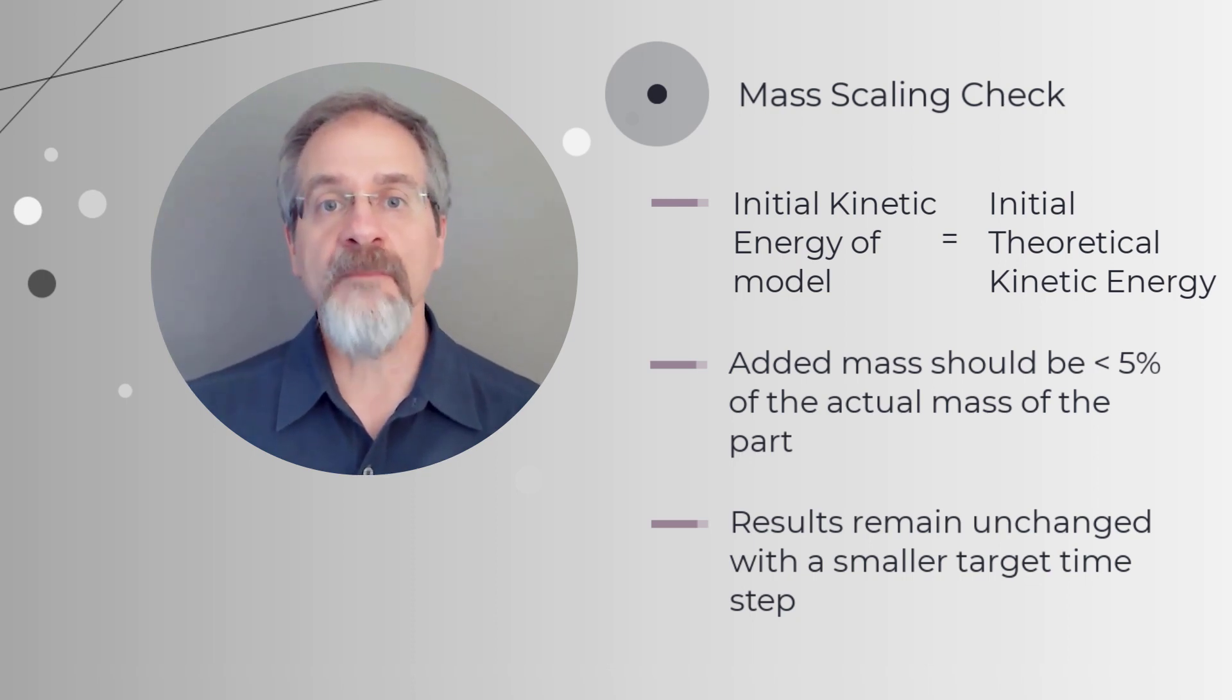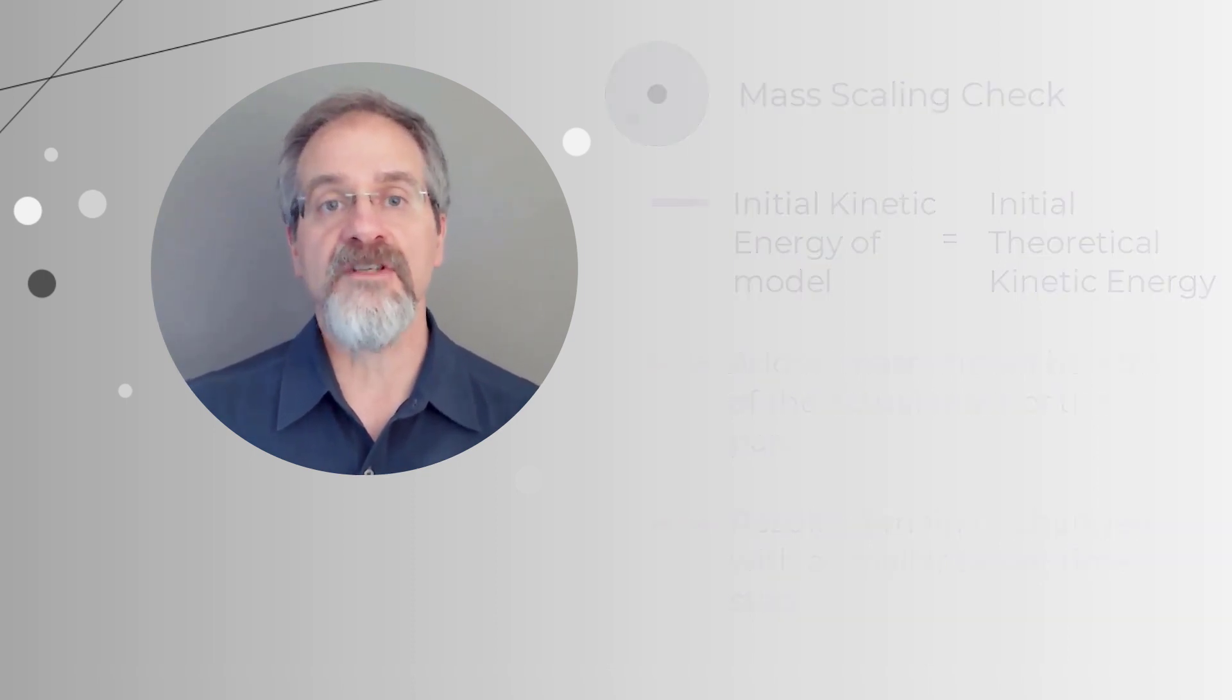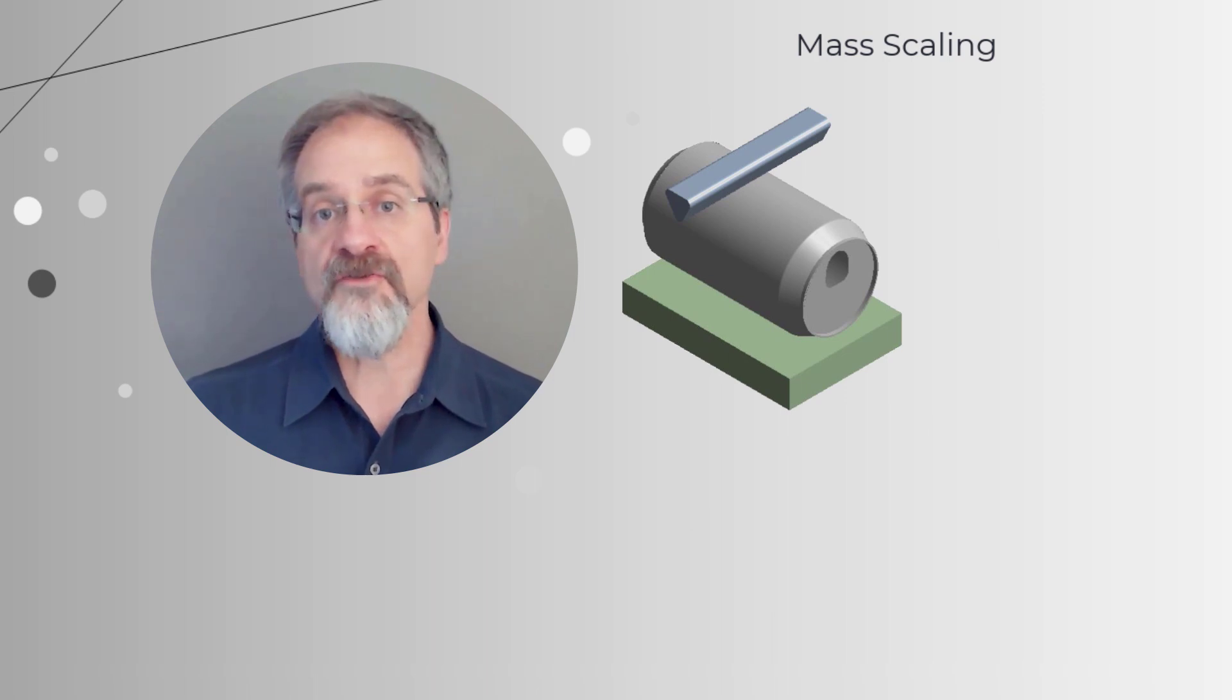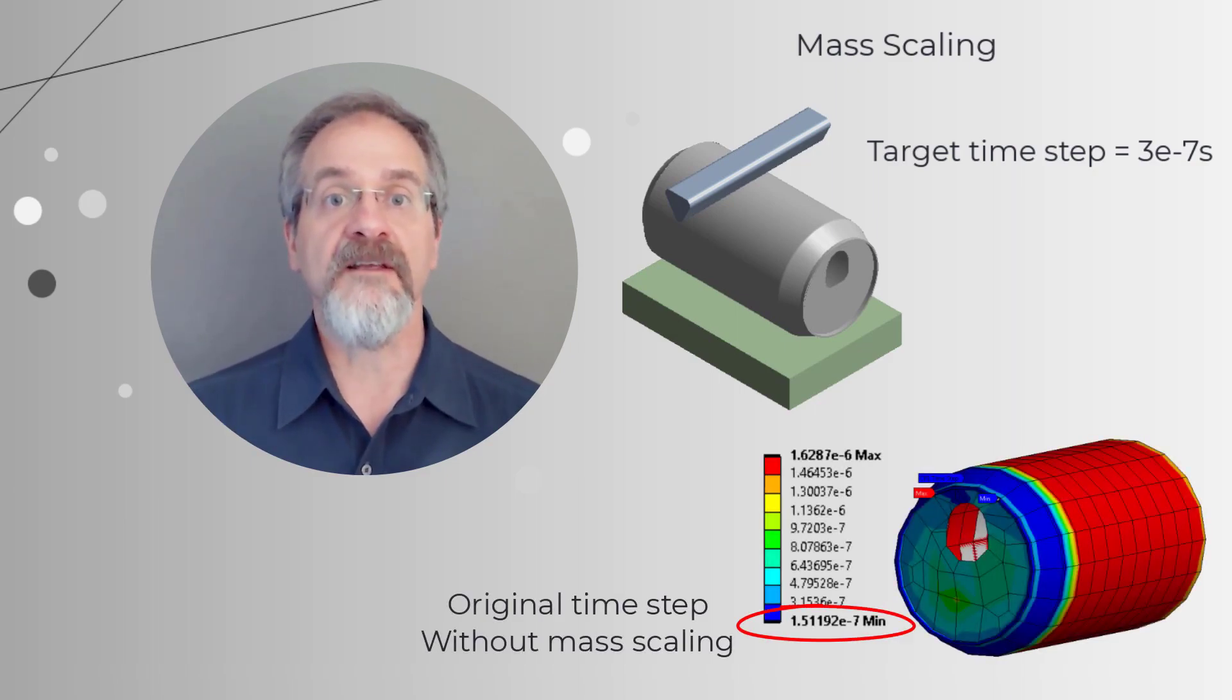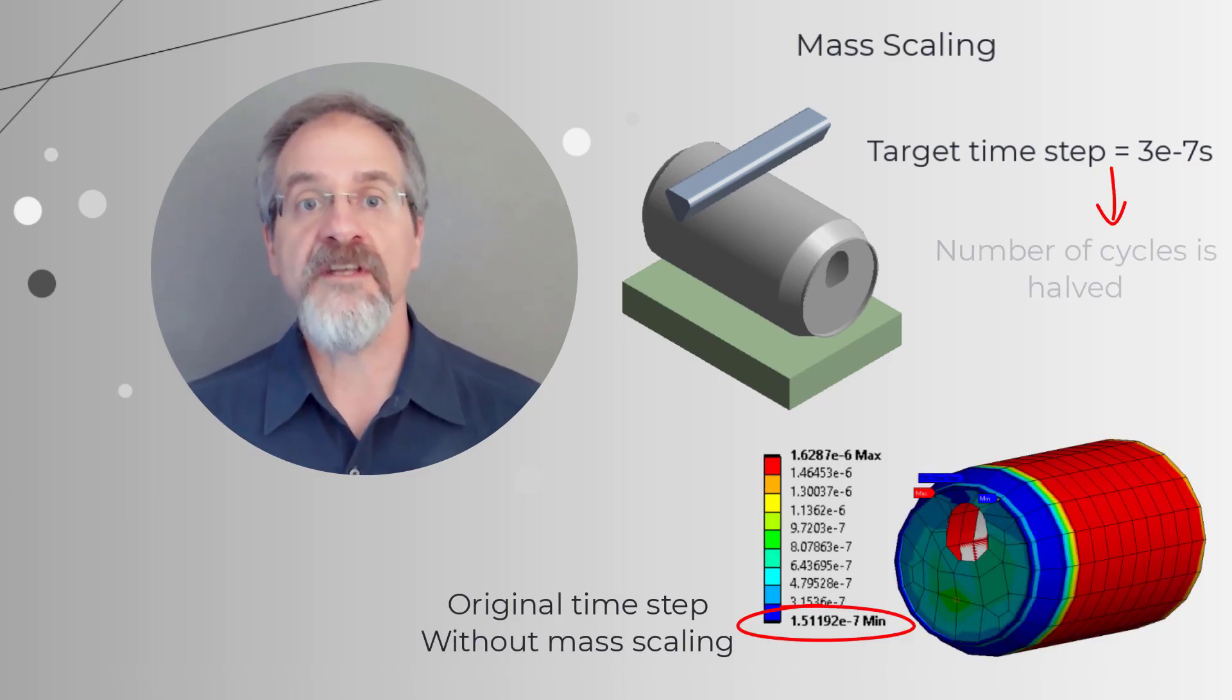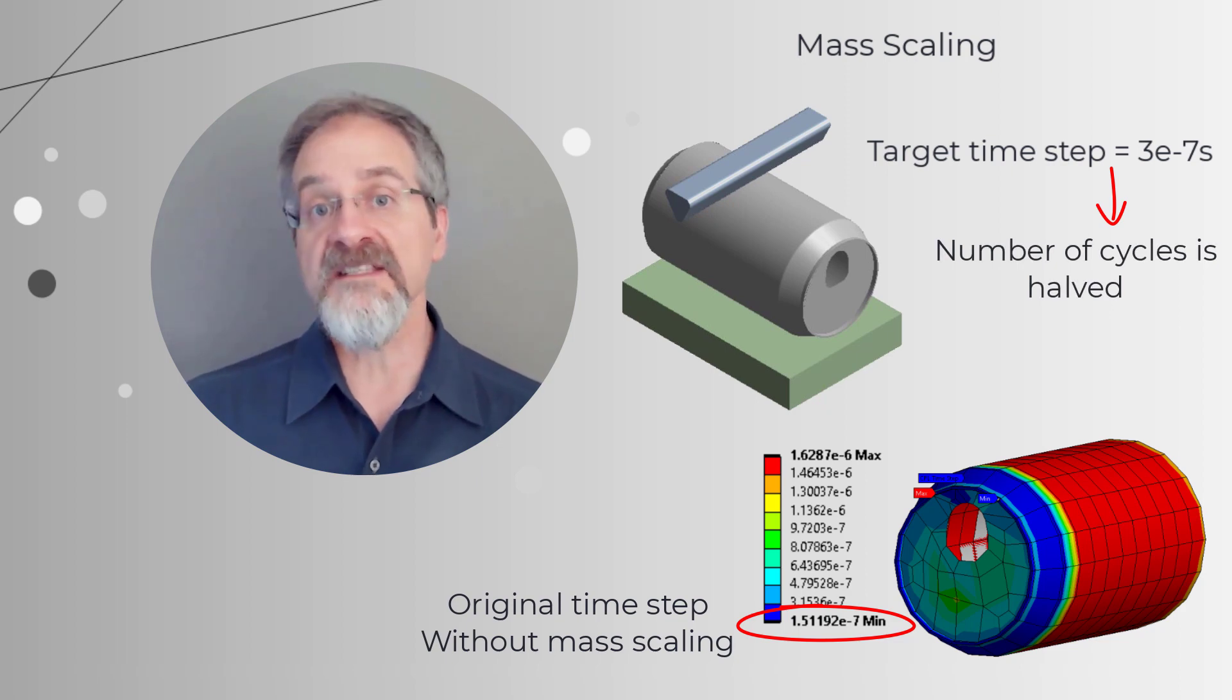Let's use mass scaling to optimize the runtime of the can crushing problem. Let's try setting the target time step to 3e-7 seconds, or twice the time required without mass scaling. Hence, the number of cycles required to reach the end time is halved.